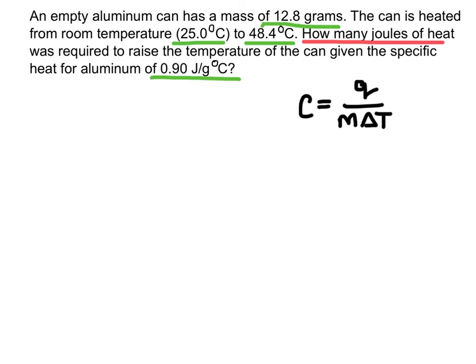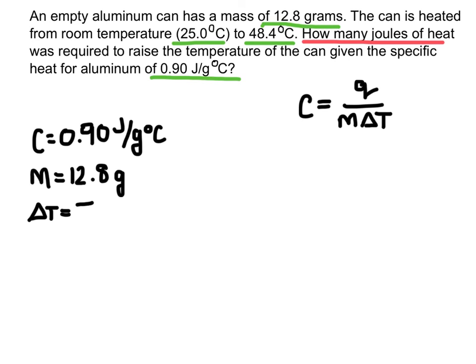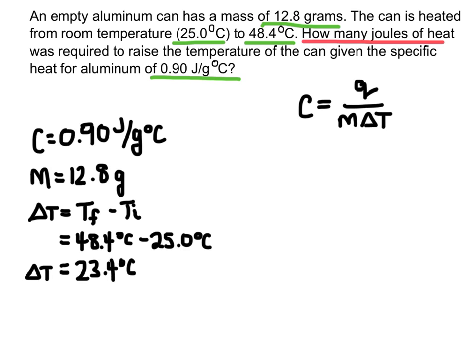And then I'll think about what pieces of information I have. I know the specific heat, that's C. And then I also know the mass here, it's 12.8 grams. So I know this part and this part. I also know the change in temperature. It went from 25 degrees Celsius to 48.4 degrees Celsius. To calculate the change, whenever we see the delta, we always take the final and minus the initial. So I have 48.4 degrees minus 25 degrees. And I get a change of 23.4 degrees Celsius.